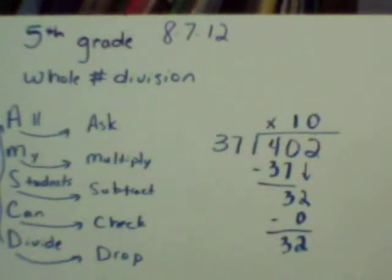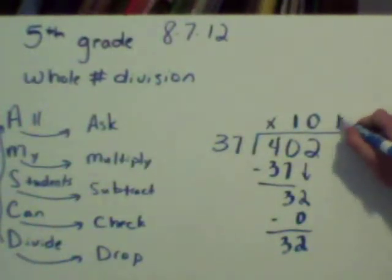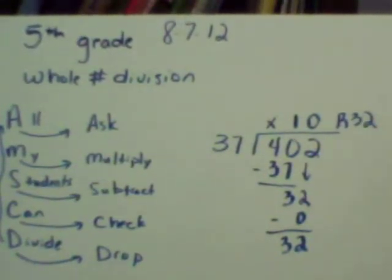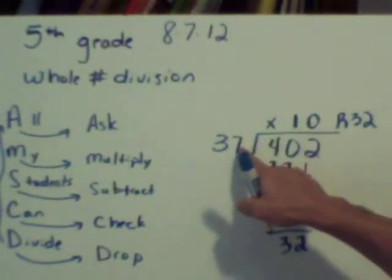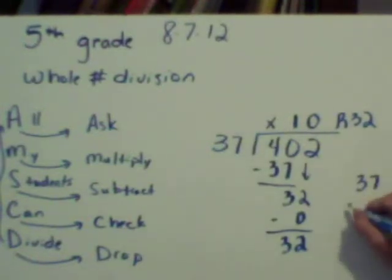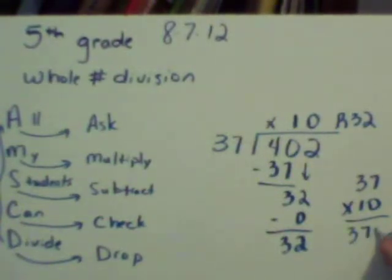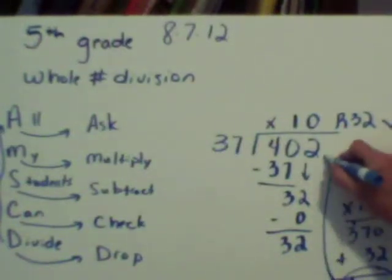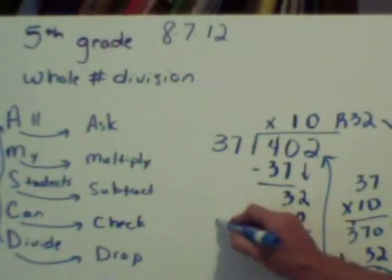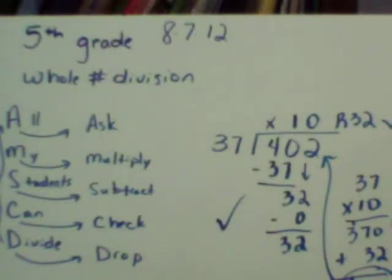There's nothing left to drop down. Now, for right now, remainder is okay. Later on, we'll work with decimals and fractions. But for now, it's okay to say remainder 32. And the best way to check this when you're finished is to reverse and just multiply 37 times 10. And you get 370. And then add this remainder back into it. And if you get what you started with, you know your problem is right. You've double-checked your work and everything is good.